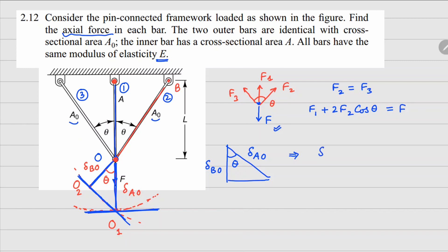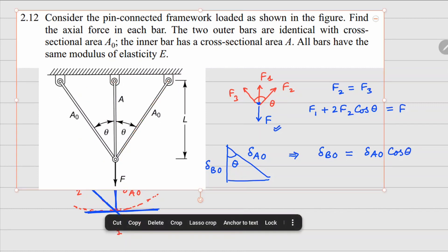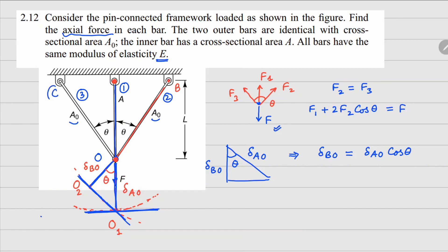From this you can see that your delta BO is delta AO cos theta. Now due to symmetry in the problem, I could have done this process for the third member also. If I mark this as C, a similar relationship will be there: delta CO equals to delta AO cos theta.